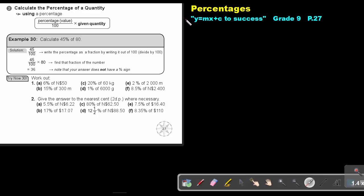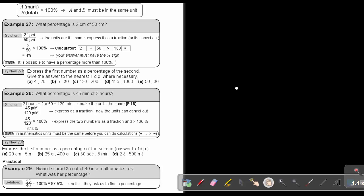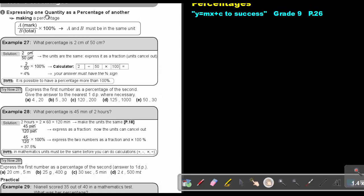Part 22. We are going to continue with percentages. You will find this on page 27 in the Namibia Mathematics Grade 9 textbook Y equals MX plus C to success. We are going to look at calculating the percentage of a quantity. This is the reverse of the previous session where we were expressing one quantity as a percentage of another.